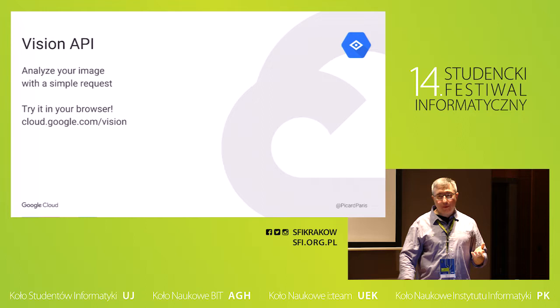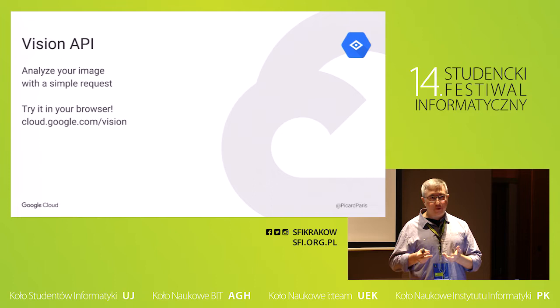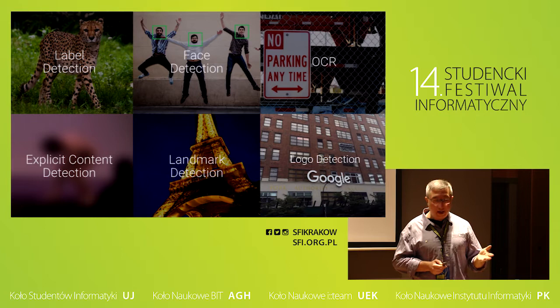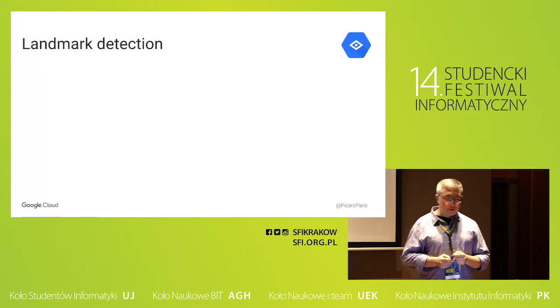The Vision API is my favorite. This time we're not giving text or speech — we're giving pictures. I've been working on image processing and I've really been impressed; it's one of the reasons I joined Google. It's able to detect labels, faces, text, monuments, places, the type of picture, and also logos. I thought it would be interesting to see a few examples.